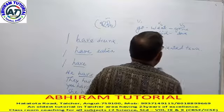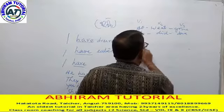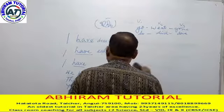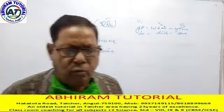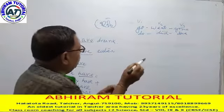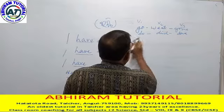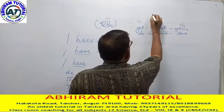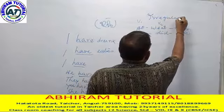So you always have to be conscious about how to use present perfect in English while writing. Always remember V1, V2, V3 — these are known as irregular verbs.